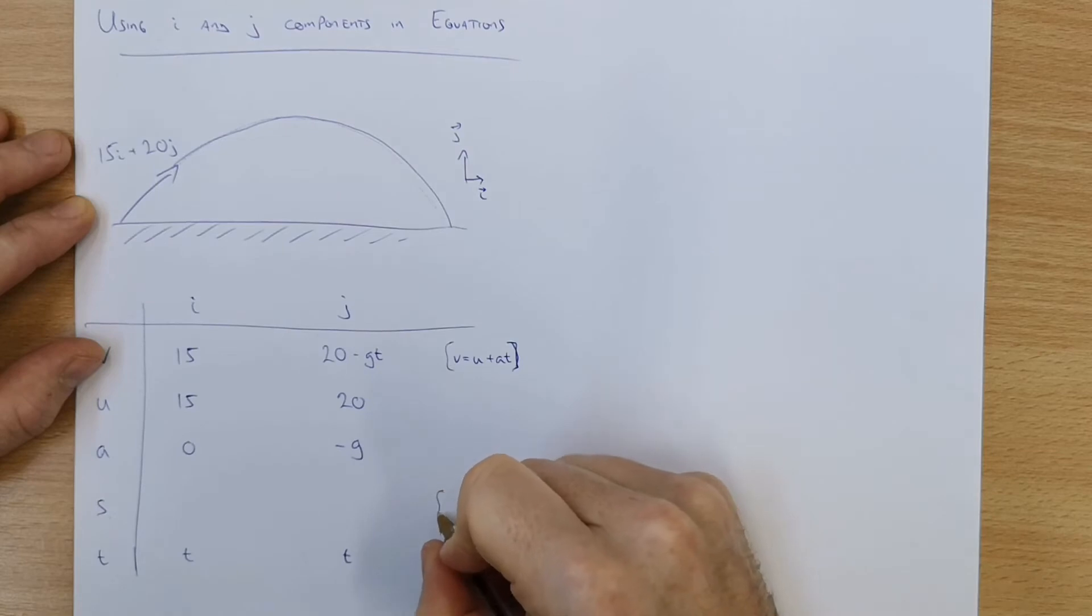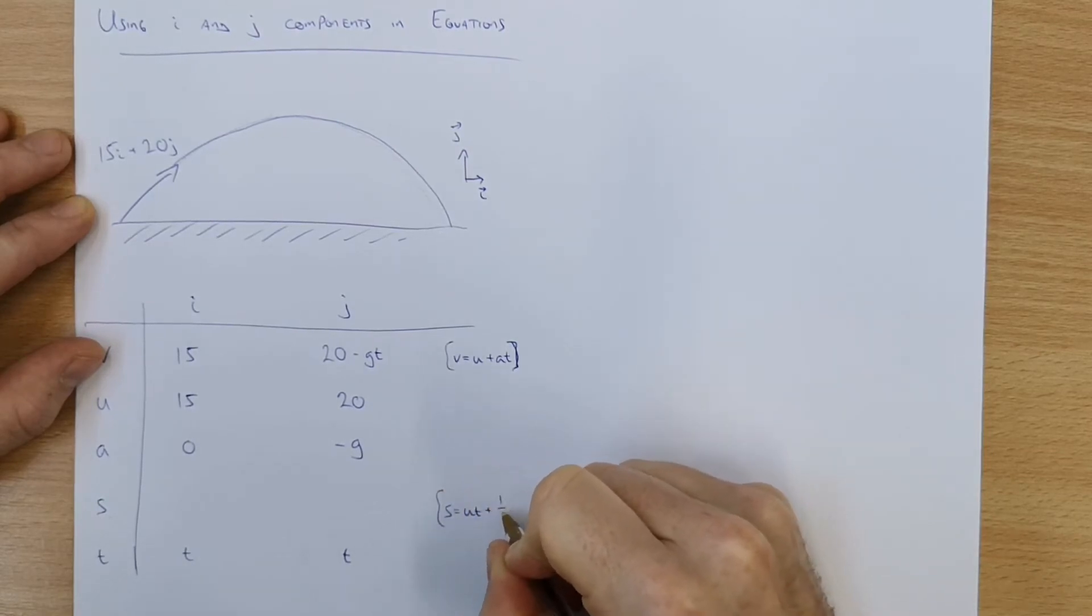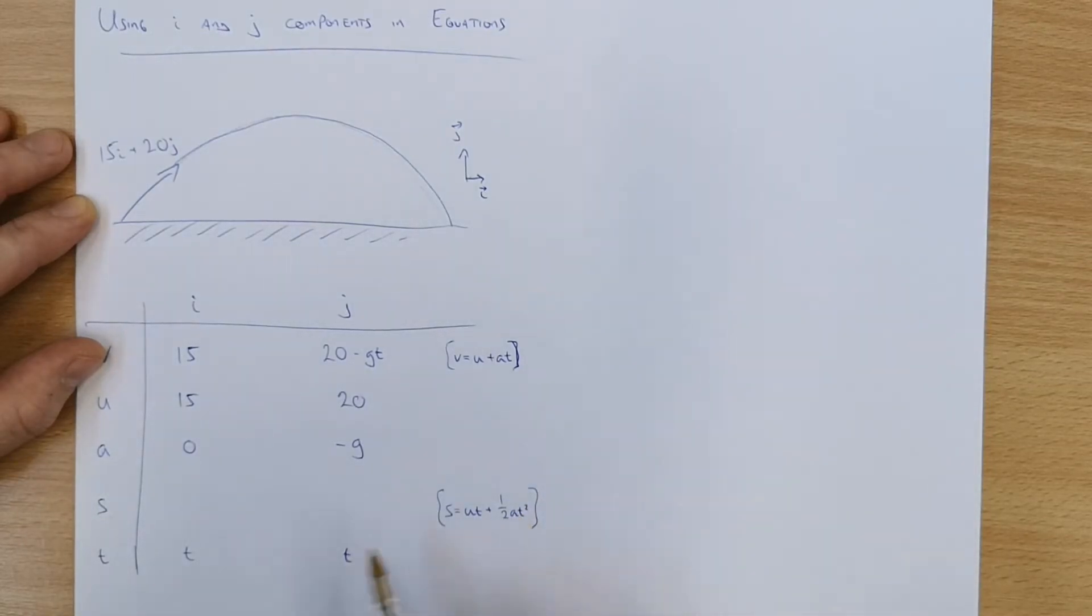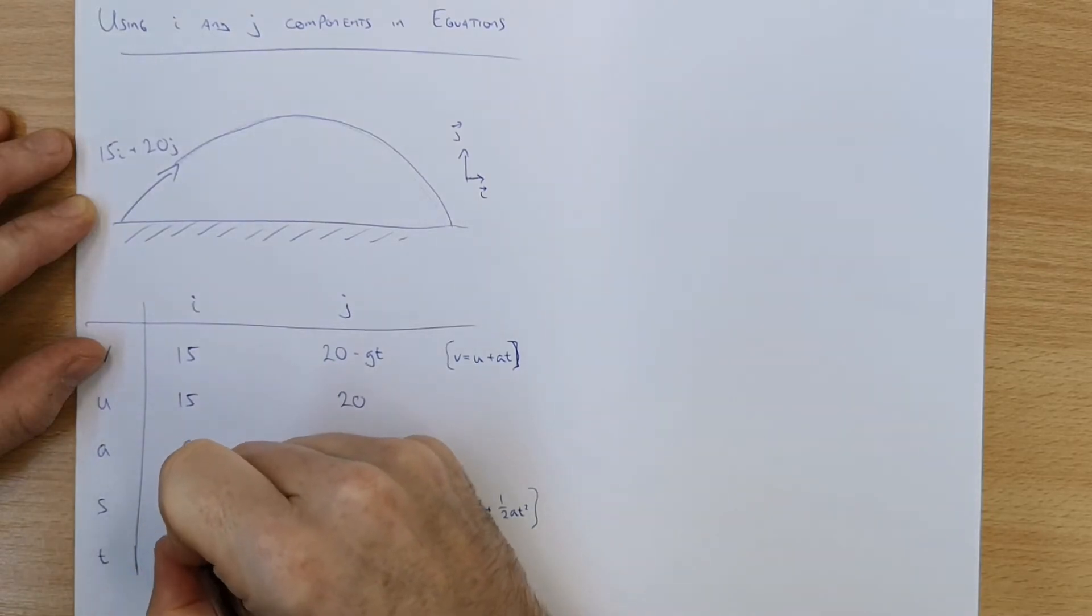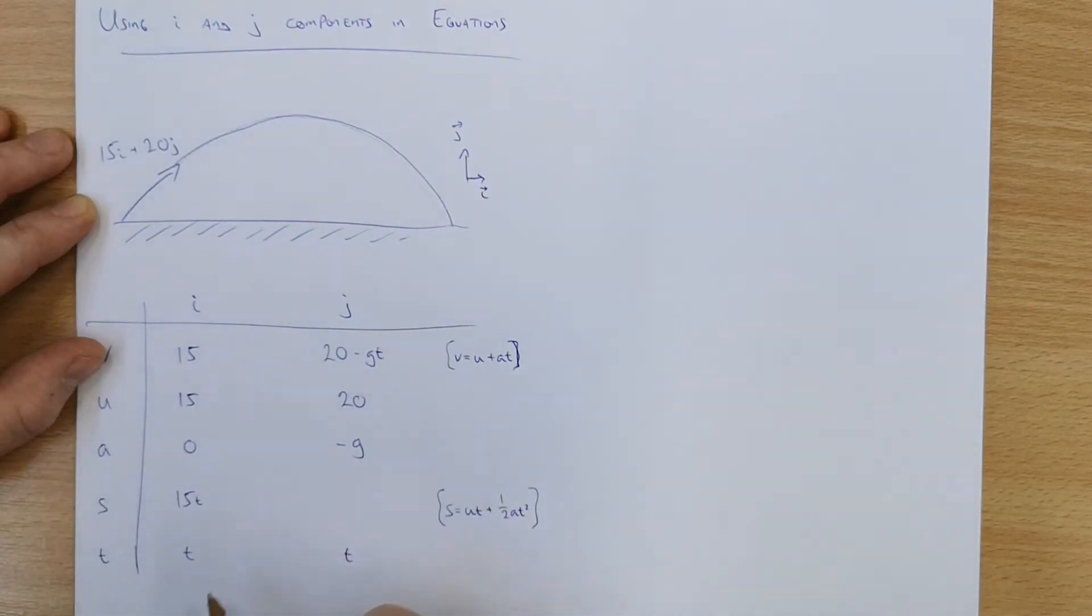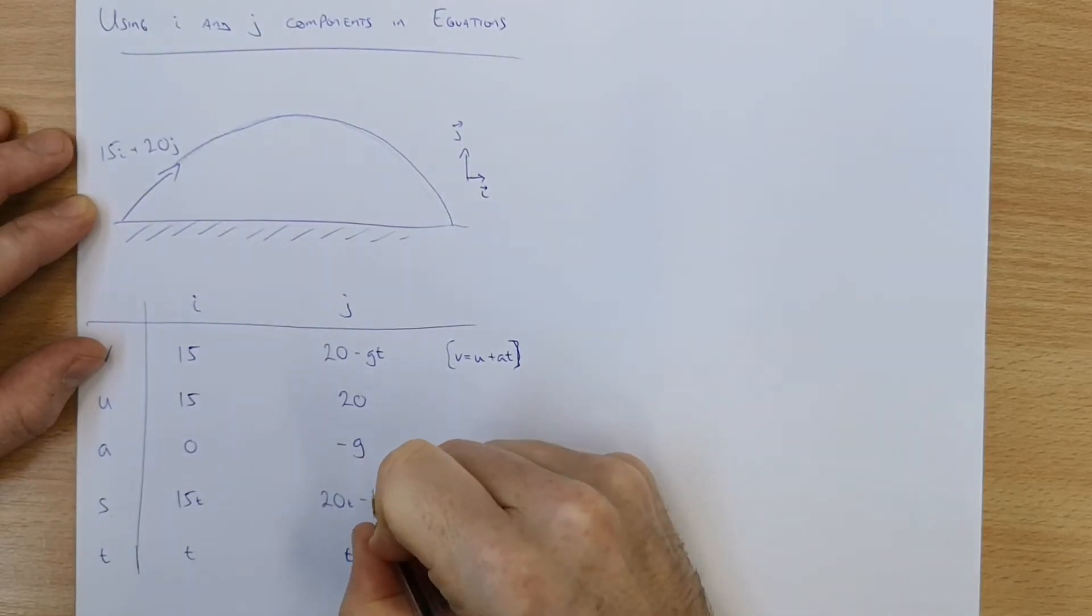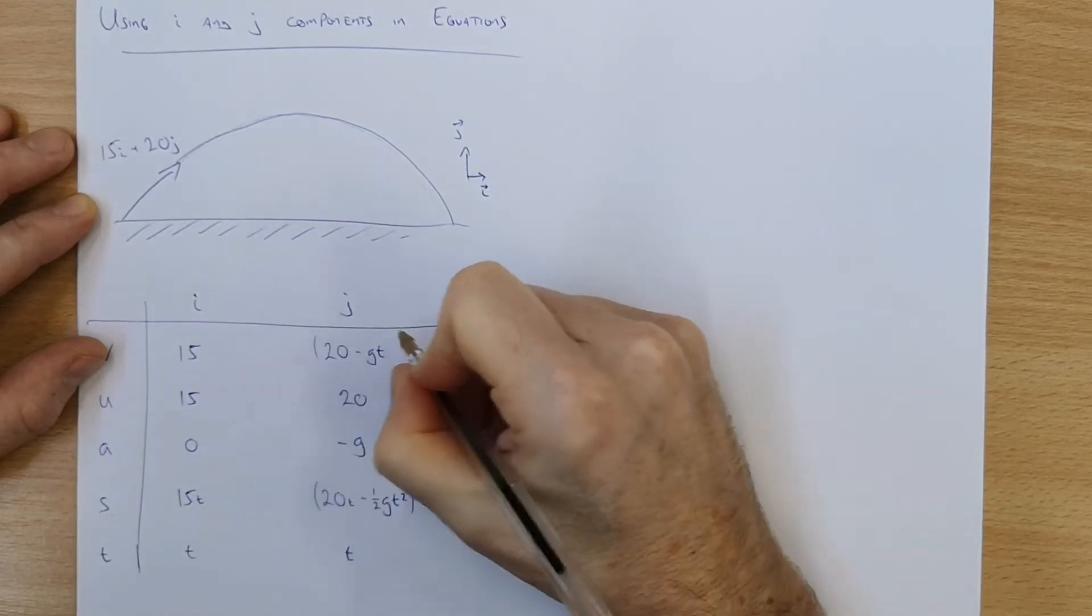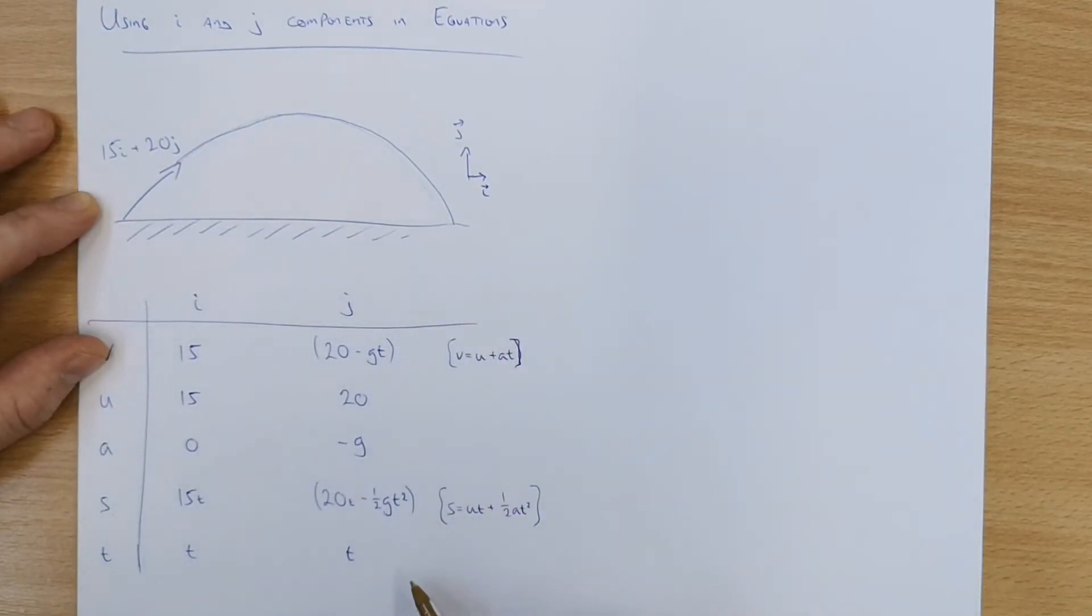In the s direction we're going to use s equals ut plus half at squared. Again for i it's nice and straightforward because a goes to zero so it's just ut so it's 15t. And the j direction we get a little bit of a bigger equation, it's going to be 20t minus half gt squared. Put those in brackets, keep it nice and tidy. And that's how they're all kind of laid out.